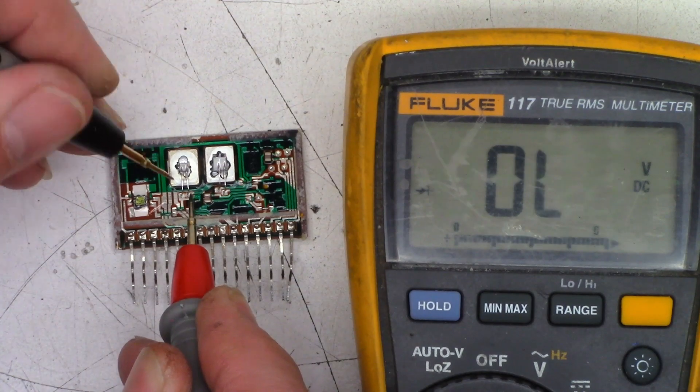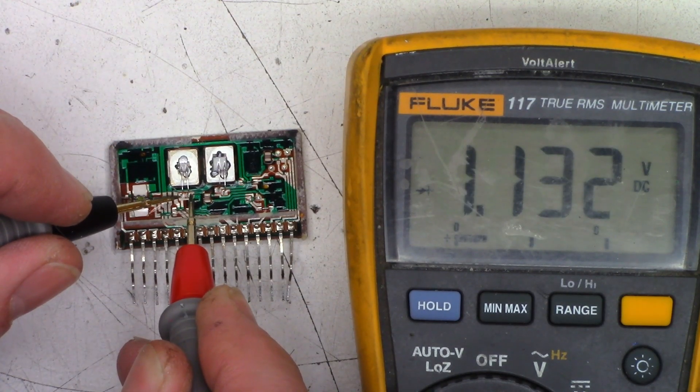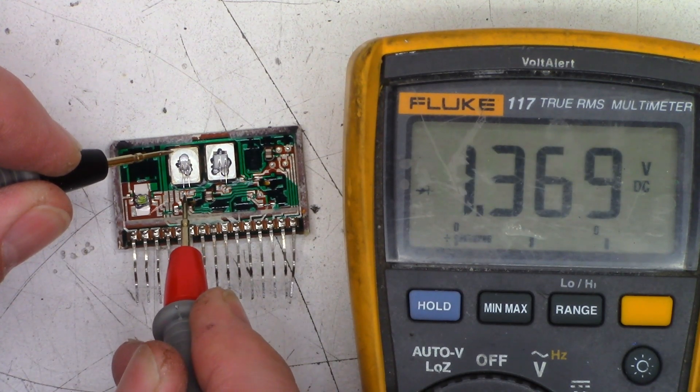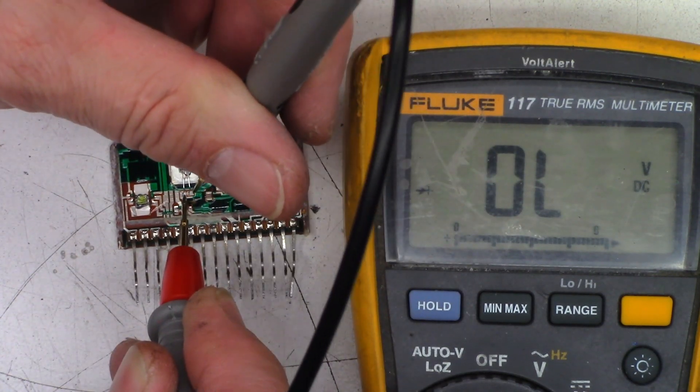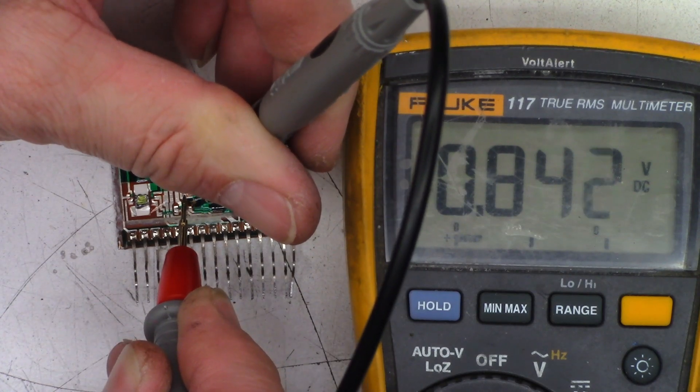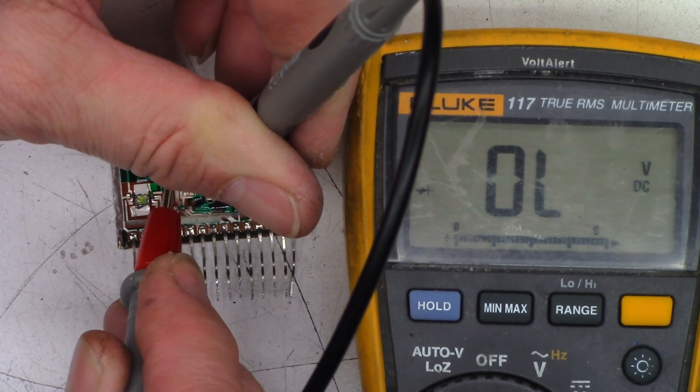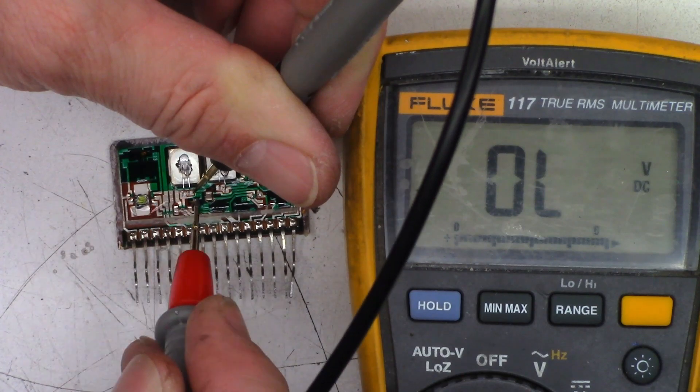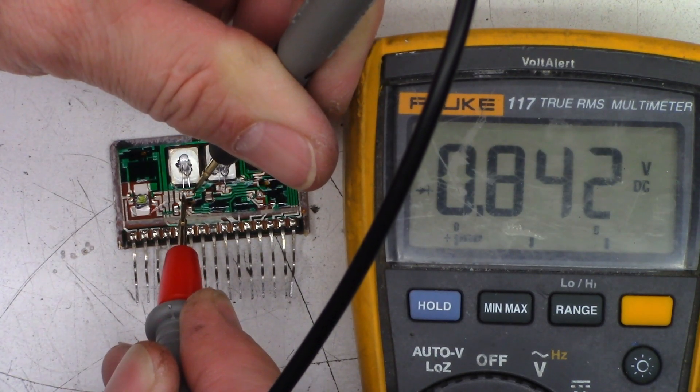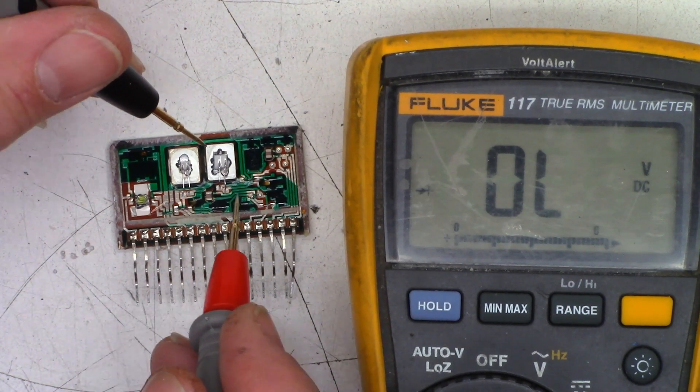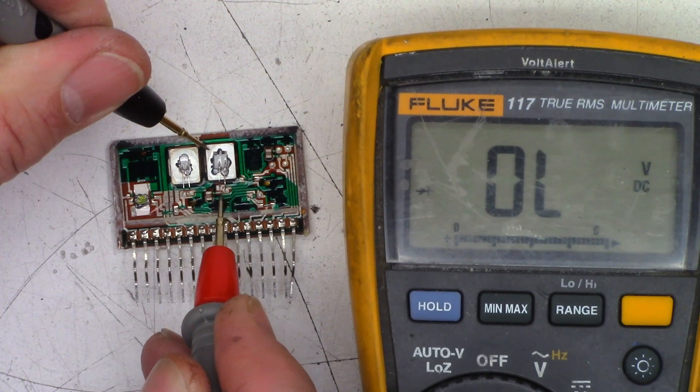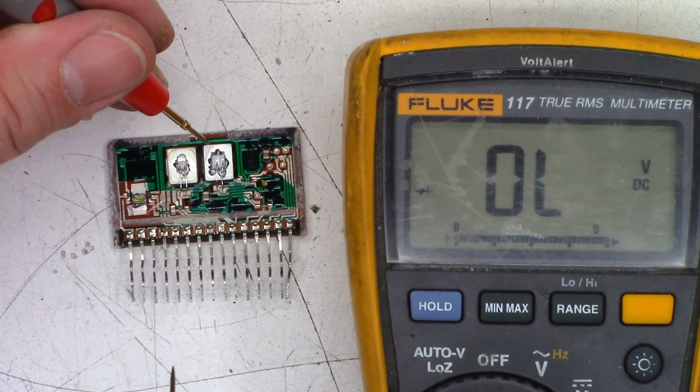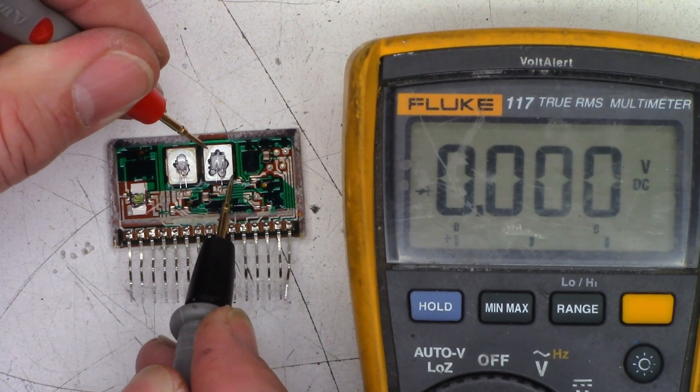So I do get a diode junction there and no diode junction there. Nothing there. Hopefully I don't... I might have damaged that one by touching it. 841. I'm sure my hand is right in the way of that. So yeah, 842 that way. I'm not seeing a complete junction on that transistor at all. Nothing there. Nothing there. Reverse the leads, make sure I got continuity. Yes, I do.